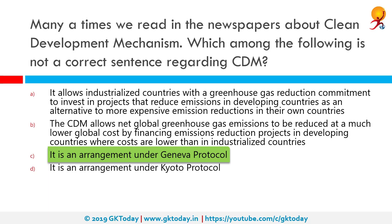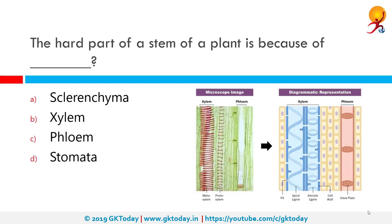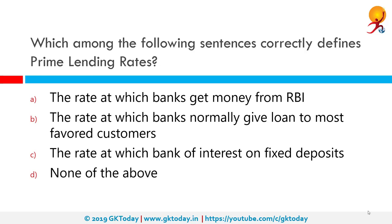The hard part of the stem of a plant is because of xylem. Xylem is one of the two types of transport tissues in vascular plants, phloem being the other. The basic function of xylem is to transport water from roots to stems and leaves, but it also transports nutrients.